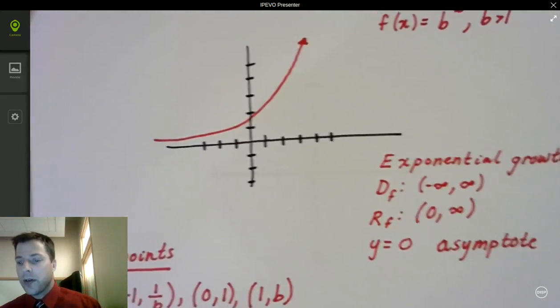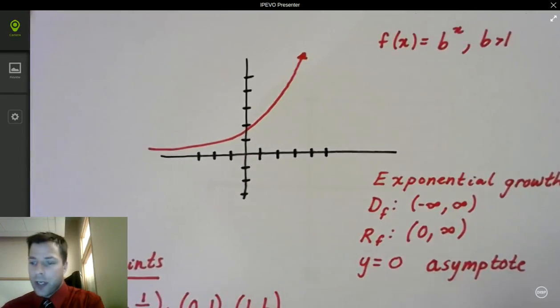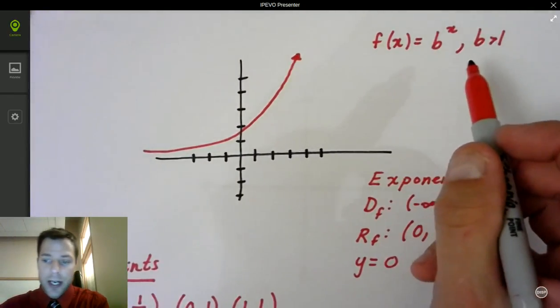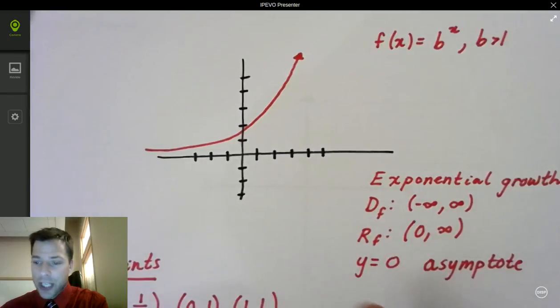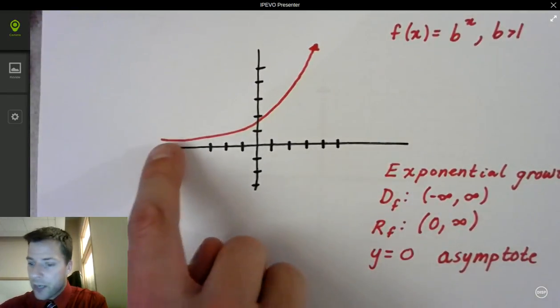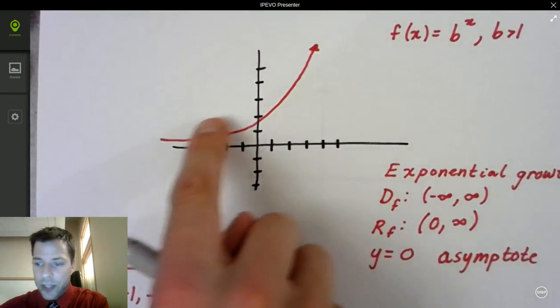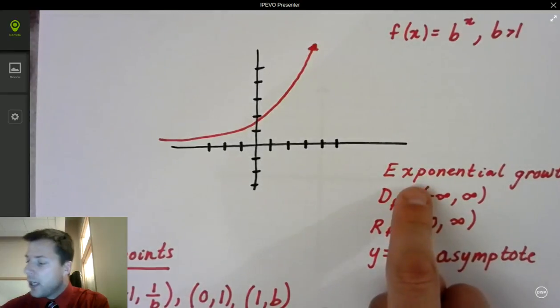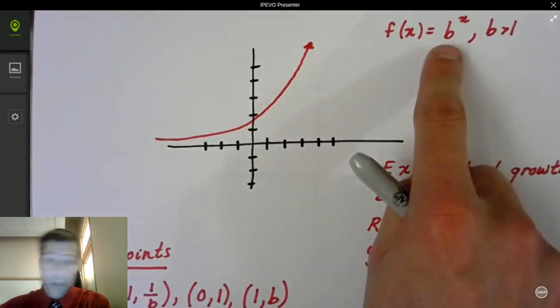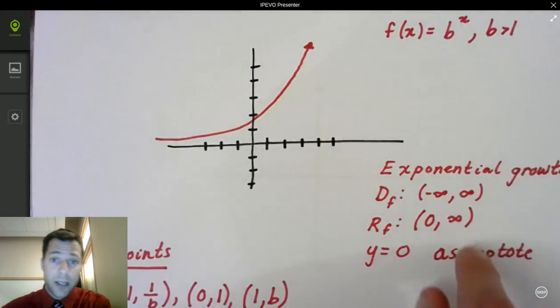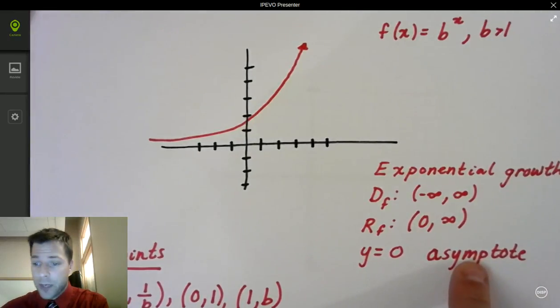Okay, so the graph that I gave you, f of x equals b to the x where b is greater than 1, is actually exponential growth. This is what the family is going to look like. There's some key things going on here. It's exponential growth because the b value, what's being multiplied repeatedly, is larger than 1.